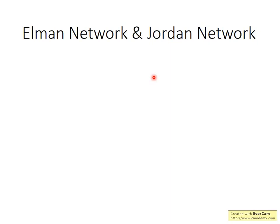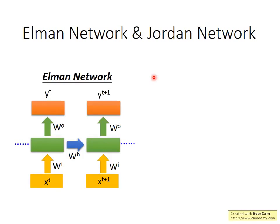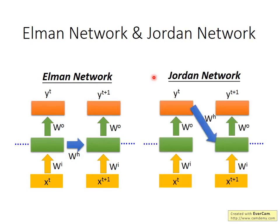The RNN has different variants. What we just talked about is called the Elman network — saving the value of the hidden layer and using it next time. The other variant is called the Jordan network, which stores the output value of the entire network and uses it at the next time point. The legend says Jordan network has better performance because the hidden layer has no target, making it hard to control what it stores — but the output y has a target, giving better control over memory content.